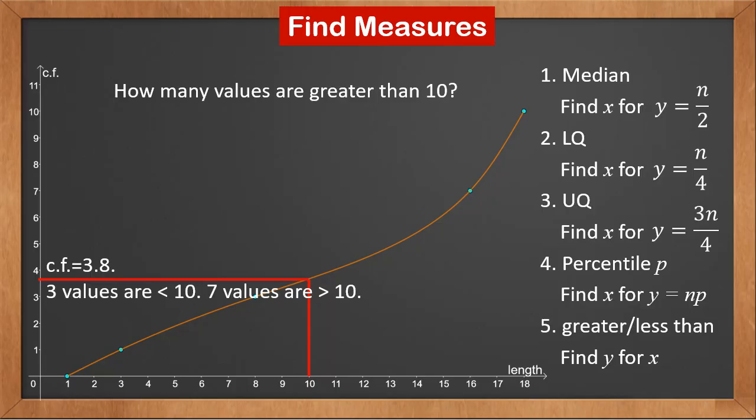It is 3.8, which means the cumulative frequency is 3.8. Therefore, there are three values less than ten. The total number is ten. So seven values are greater than ten. Remember, these are all estimates and not accurate values.